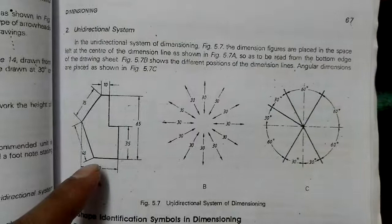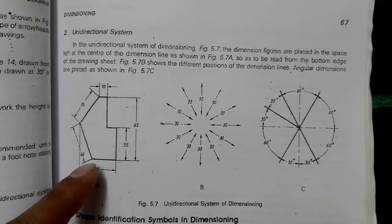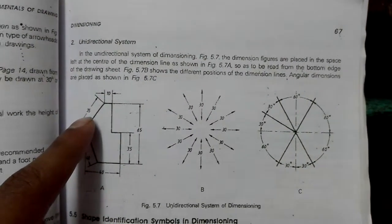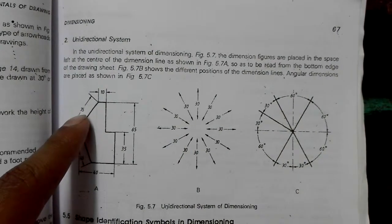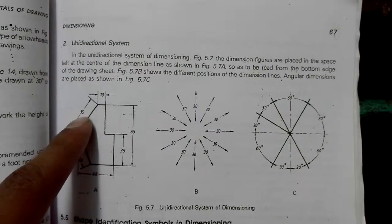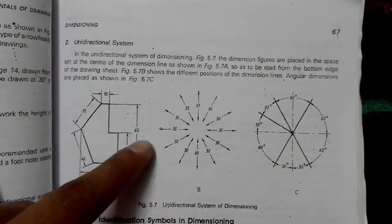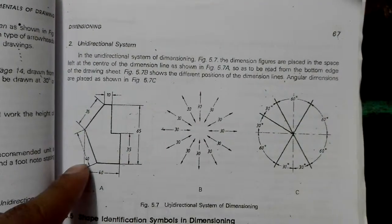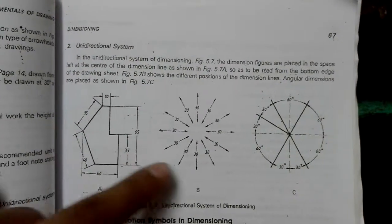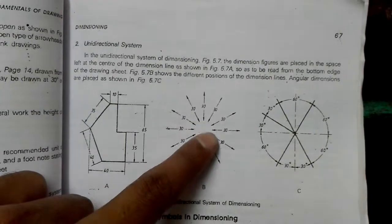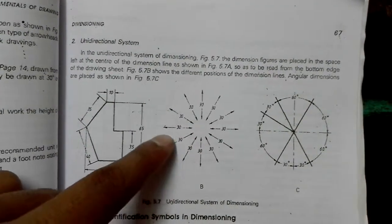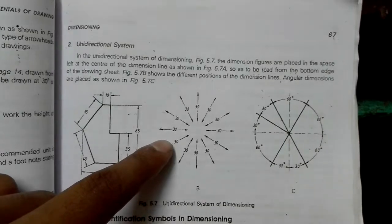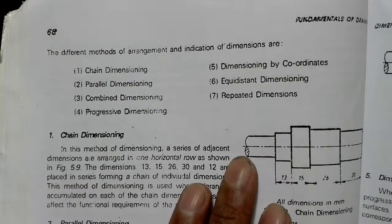In the unidirectional system, all dimension values are written in the same direction, regardless of the direction of the dimension line. Values like 65 and 35 are all represented in the same direction. That is why it is called the unidirectional system.